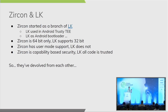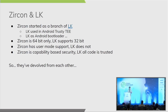We need a brief history lesson on Zircon, the kernel. Zircon actually started as a branch of Little Kernel, or LK. LK has been used in Android's Trusty and the Android bootloader. Zircon differs in that it's 64-bit only — there's no 32-bit support, whereas Little Kernel has that. Zircon also has a user mode, scales up to be a modular operating system, and has the concept of capability-based security, which we'll get into in a minute.